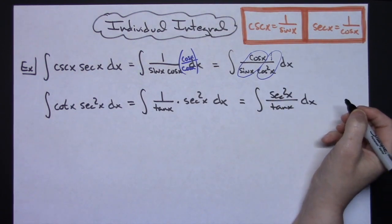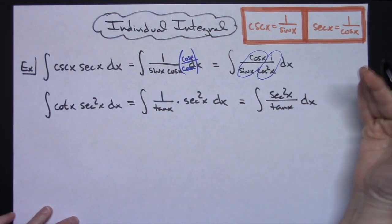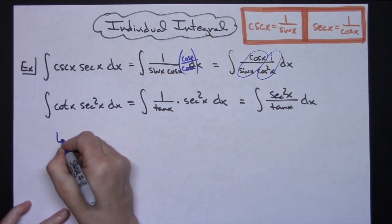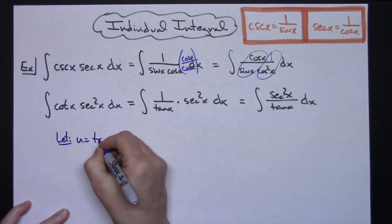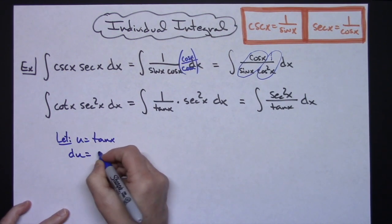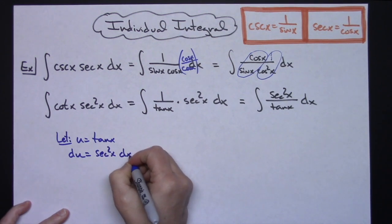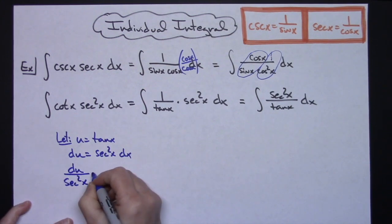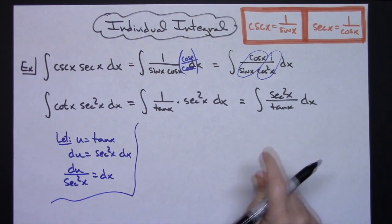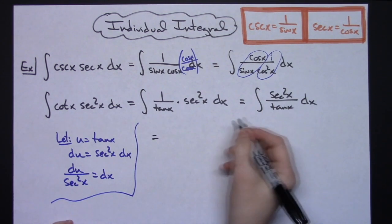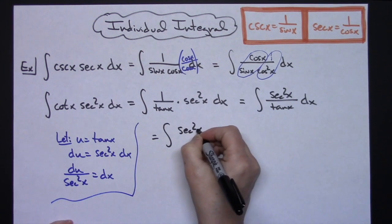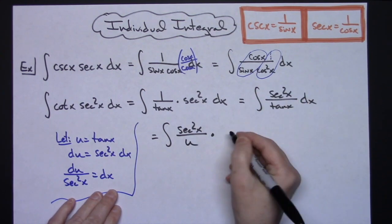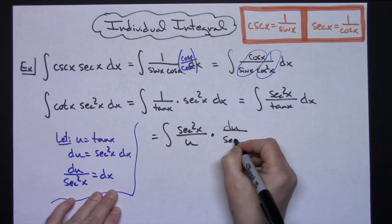At this point I'm finally able to pick a u because I've got a nice correlation between tangent x and secant squared x. I'm going to let u equal tangent x. Taking the derivative of both sides gives secant squared x dx. Solving for dx gives du over secant squared x. Taking this integral and substituting, I'll have secant squared x on top, tangent replaced with u on the bottom, and dx replaced with du over secant squared x.